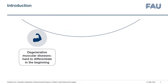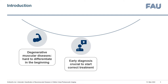Duchenne muscular dystrophy and spinal muscular atrophy are two degenerative muscular diseases which manifest in early childhood. They are hard to differentiate in the beginning and as the muscles degenerate quickly, early and reliable diagnosis is crucial to start with the correct treatment.